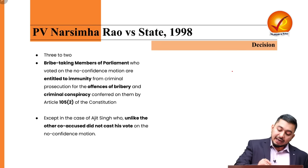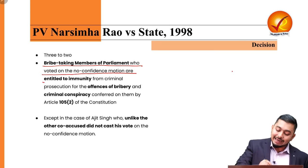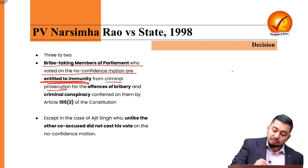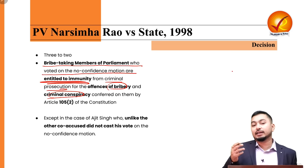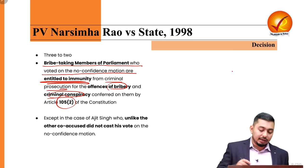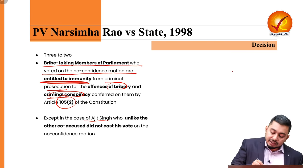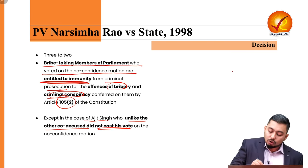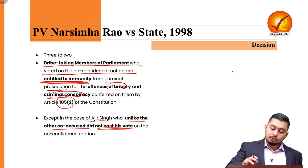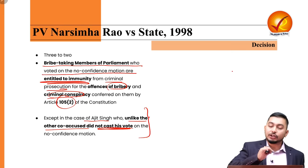The bribe-taking members of Parliament who voted on the no-confidence motion are entitled to immunity from criminal prosecution for offences of bribery and criminal conspiracy because it falls under the ambit of Article 105(2). However, in the case of Ajit Singh, who unlike the other co-accused did not cast his vote even though he received the bribe, he was prosecuted.